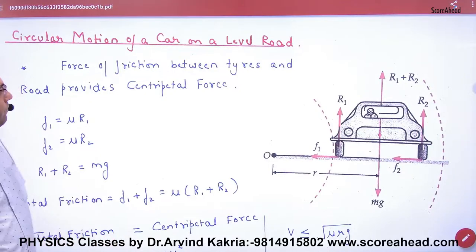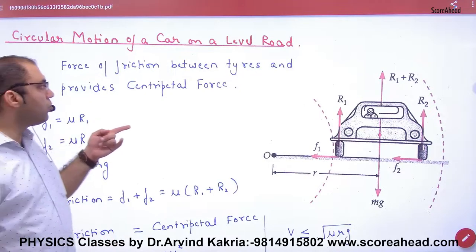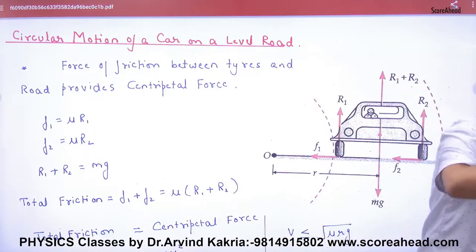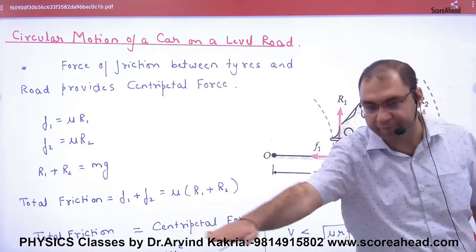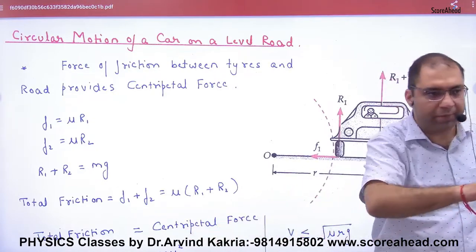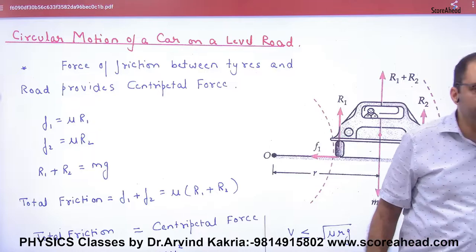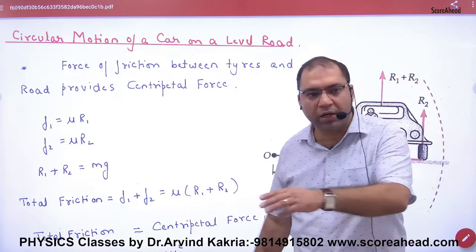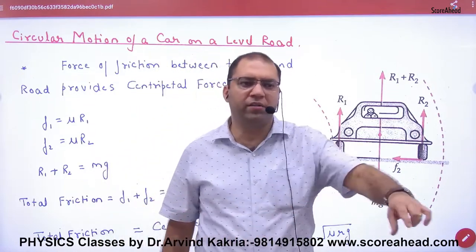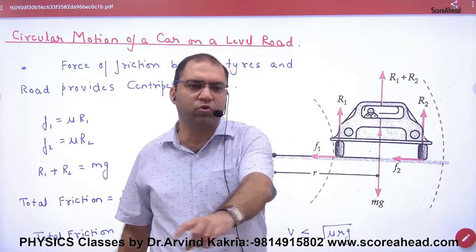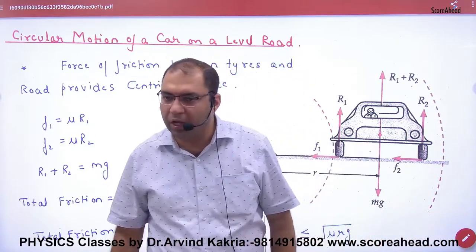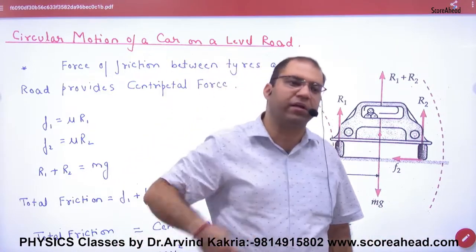The topic is circular motion of a car on a level road. So a level road — the car is running. My first question: if the car is running on a level road and is running very fast, what happens?